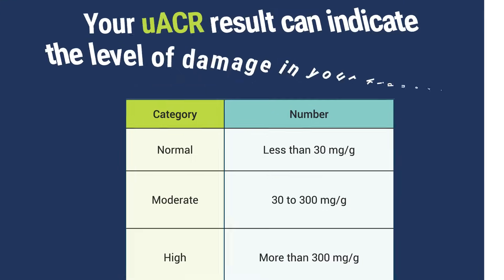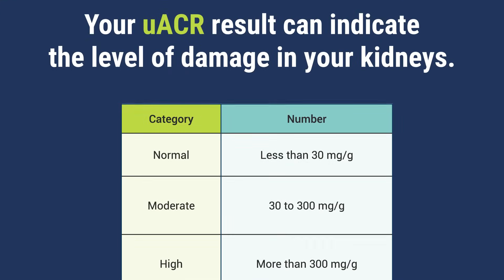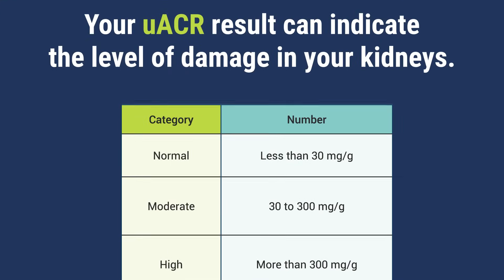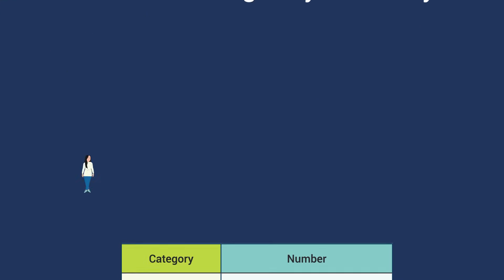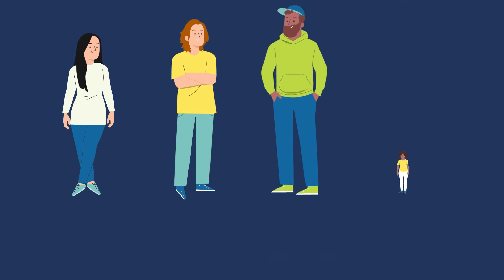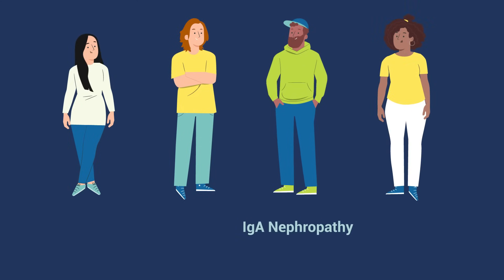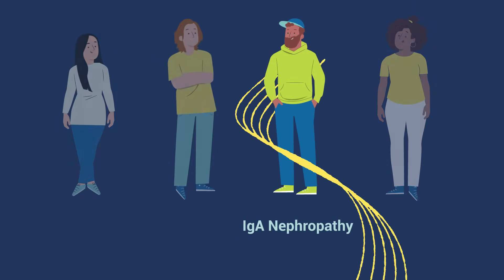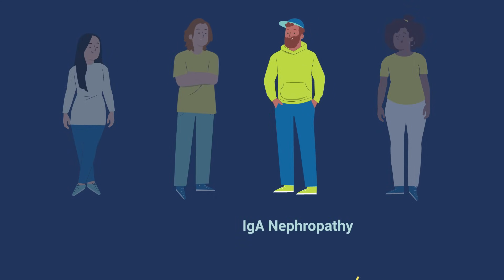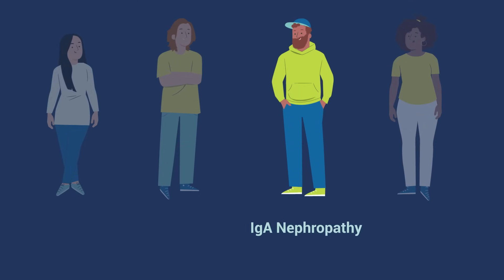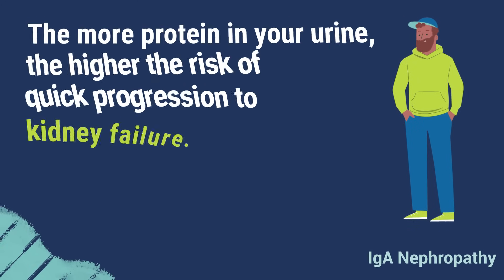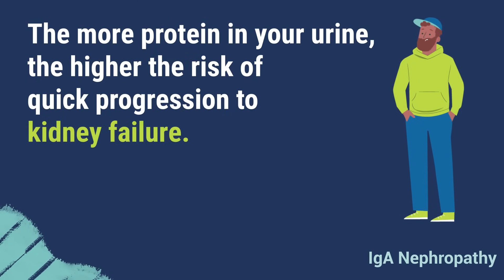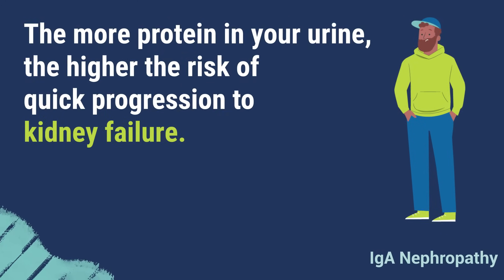Your UACR result can indicate the level of damage in your kidneys. This test is especially important for people with IgAN, since it's a strong predictor of how the disease is progressing or getting worse. The more protein in your urine, the higher the risk of quick progression to kidney failure.